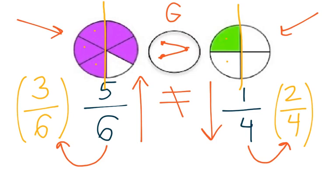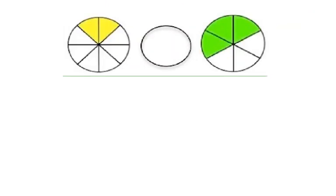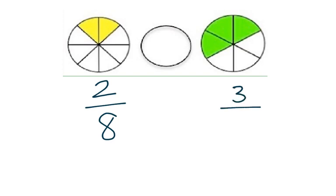Let's try another one. Remember, we're going to start by identifying the fraction. I see that there are 2 pieces shaded in and there are 8 pieces in the whole. And here, there are 3 pieces shaded in with 6 pieces in the whole.